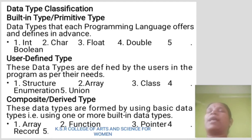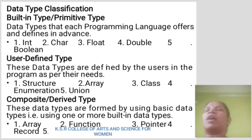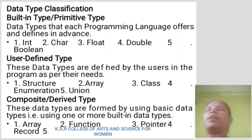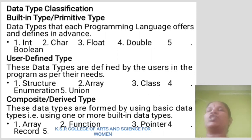Data type classification. Built-in data types or primitive data types: data types that each programming language offers and defines in advance — integer, character, float, double, and boolean. User-defined data types: these data types are defined by the user in the program as per their needs — structure, array, class, enumeration, union.